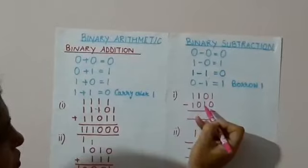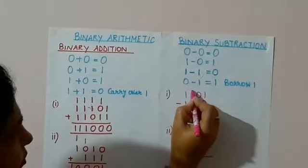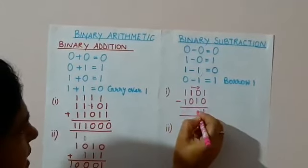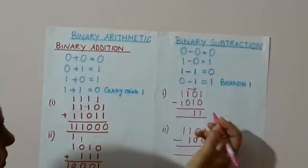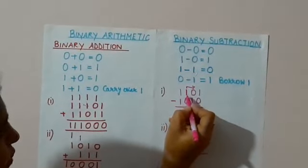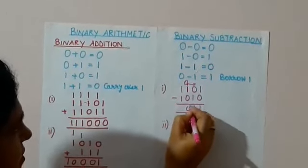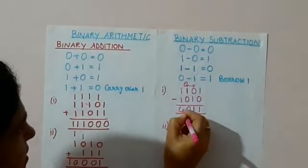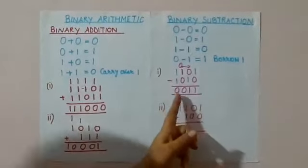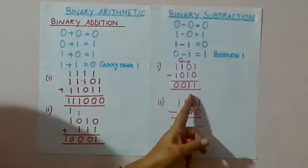Next is 0 minus 1. 1 can't be subtracted, so it will borrow 1 from the next digit, and the answer will be 1 here. Now, when it has borrowed 1, this digit becomes 0. So, 0 minus 0 is 0, and 1 minus 1 is 0. The answer is 0011.